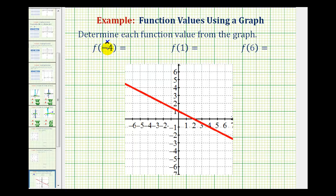So for f of negative four, we'll find negative four on the x-axis which is here, and then we'll move up to the function. This is where x is equal to negative four, and the function value is equal to the y value, which we can see here is equal to positive three.